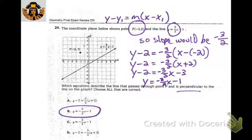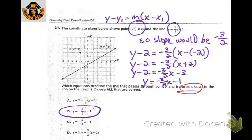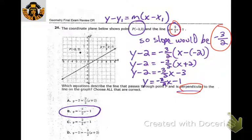We want the equation to be perpendicular and go through that point. We look at the slope here — this one is 2/3. So we want perpendicular, meaning we flip it and change the sign. Then we use point-slope form and distribute that negative 3/2. Then add the 2.